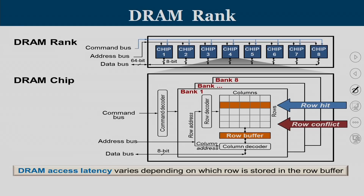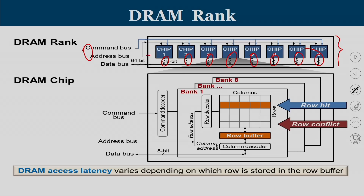In this organization a rank consists of 8 chips. The same command and address go to all 8 chips. Each chip returns 8 bits of data, and together we get 64 bits. Looking deeper into each chip, there are 8 banks — a 3D structure — and within the banks there are rows and columns. Each bank has its own row buffer.